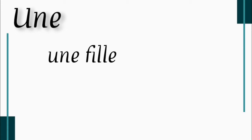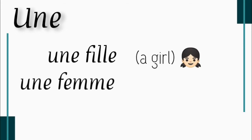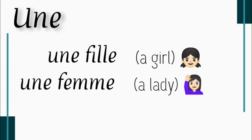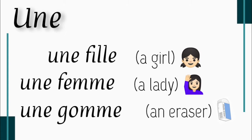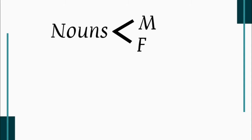Let's try to see a few examples of une. Une fille — a girl. Une femme — a lady. Une gomme — an eraser. As we have already covered in our earlier videos, in French, nouns are either masculine or feminine, as in Hindi language. English is a neutral language, but in French, all nouns are divided — some are masculine and others are feminine.